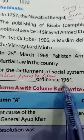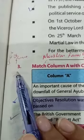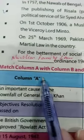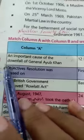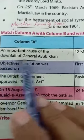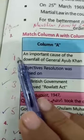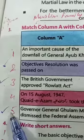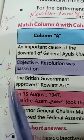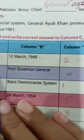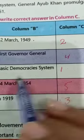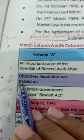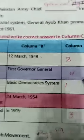Question number three of the objective: match column A with column B and write the correct answer in column C. Number one: An important cause of the downfall of General Yahya Khan — matched with Basic Democracy system. Number two: Objective Resolution was passed on 12 March 1949.